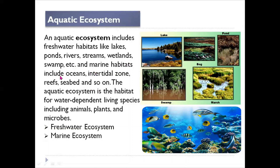The marine habitat includes oceans, intertidal zones, reefs, the seabed, and so on. The marine ecosystem covers everything in the ocean — whether at the middle part, the bottom, or the coastal banks of the ocean. The aquatic ecosystem overall is the habitat of water-dependent living organisms, especially animals and plants.